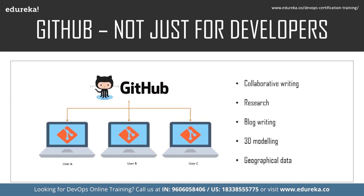The next field GitHub can be used for is blog writing. GitHub has a separate service called GitHub Pages where you can start your own blog — and it is legitimate because Barack Obama used GitHub Pages for his campaign blog. The next field is 3D modeling — GitHub has started rendering 3D models stored in .stl files, making it easier to share those modeling files with others and still benefit from GitHub's contribution, sharing, and remixing features.